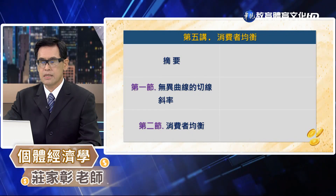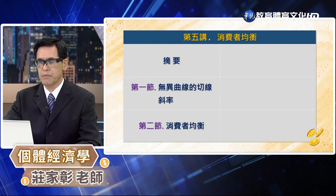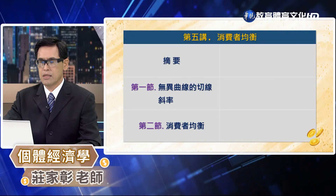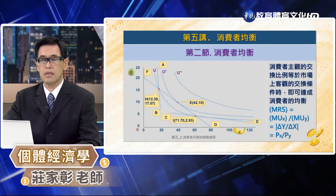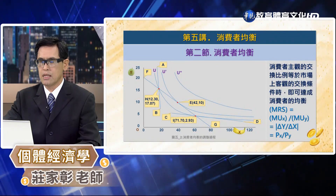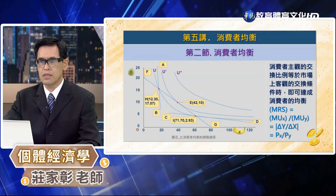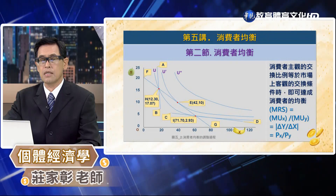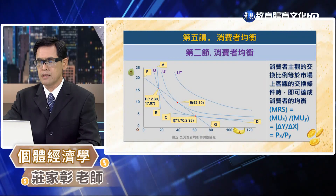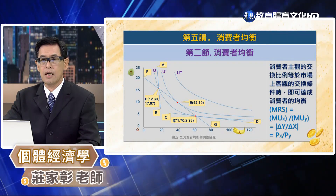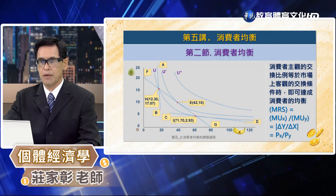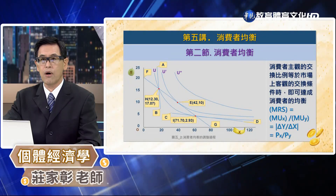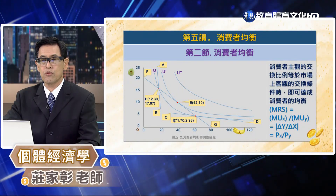我們已經在第二講次介紹的商品交換條件是財貨的價格比，也就是 Px 除以 Py。從上一節的討論我們也了解到，無差異曲線切線斜率值的絕對值就是邊際替代率，也就是消費者主觀上愿意交換的比例，即邊際效用的比值。當消費者主觀的交換比例等於市場上客觀的交換條件時，就可以達成消費者的均衡，也就是 MRS = MUx/MUy = ΔY/ΔX = Px/Py。